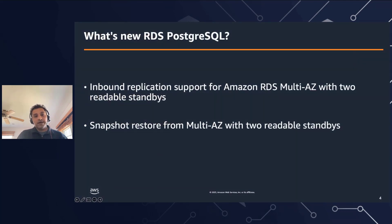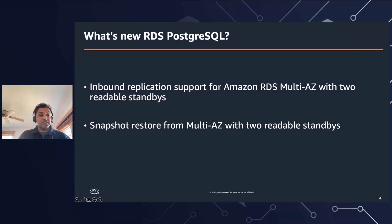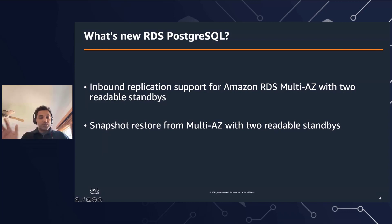Let's talk about Multi-AZ with two readable standby. A notable addition is that we now support inbound replication, meaning that if you have a Multi-AZ with one standby, you can replicate data to Amazon RDS Multi-AZ with two readable standby. Next is snapshot restore — if you have Multi-AZ with two readable standby, you can take a snapshot of it and restore it onto a single AZ cluster or Multi-AZ with one standby. Let's go back and understand the two Multi-AZ options.